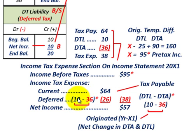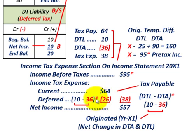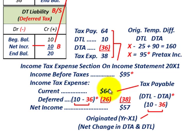The deferred tax liability of $10,000 increases our tax expense, while the deferred tax asset of $36,000 reduces our income tax expense. Netting out the deferred tax liability of $10,000 less the deferred tax asset of $36,000, we get a net reduction to income tax expense of $26,000. Reducing the current tax payable of $64,000 by that deferred tax benefit of $26,000 gives us an income tax expense of $38,000 for the year.